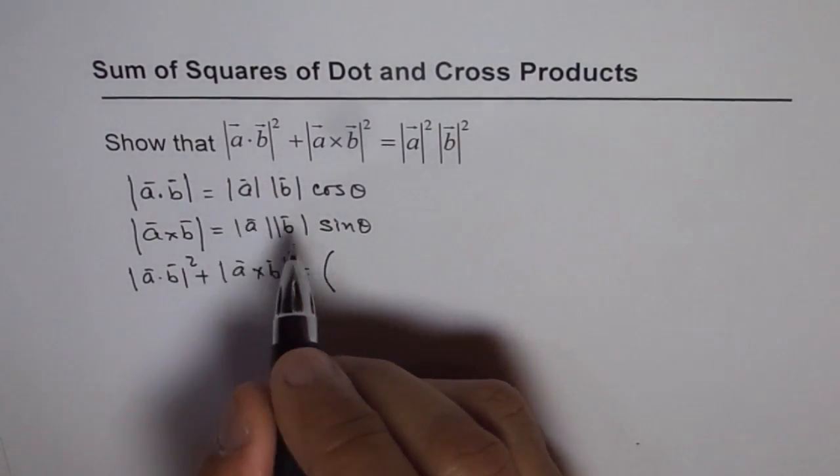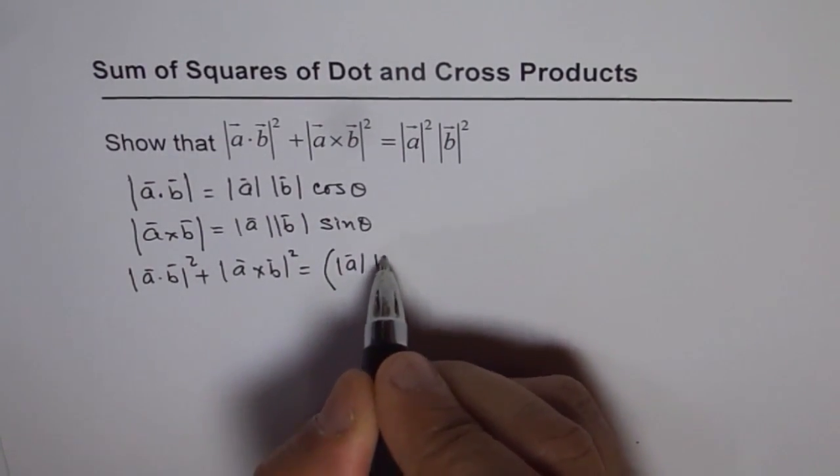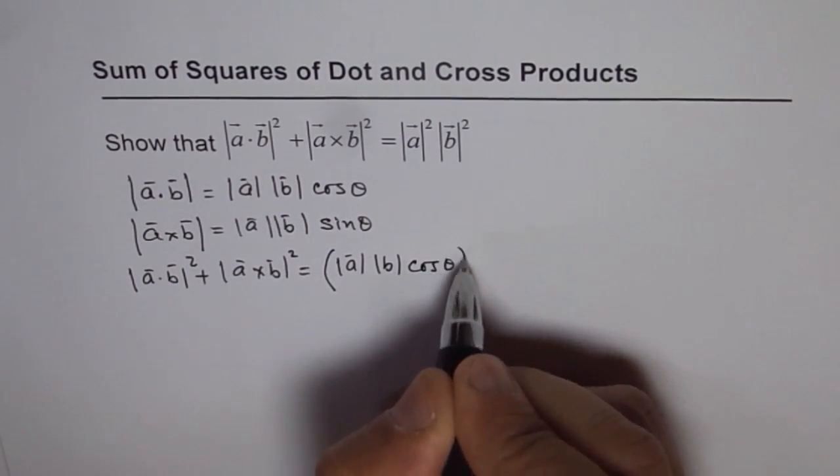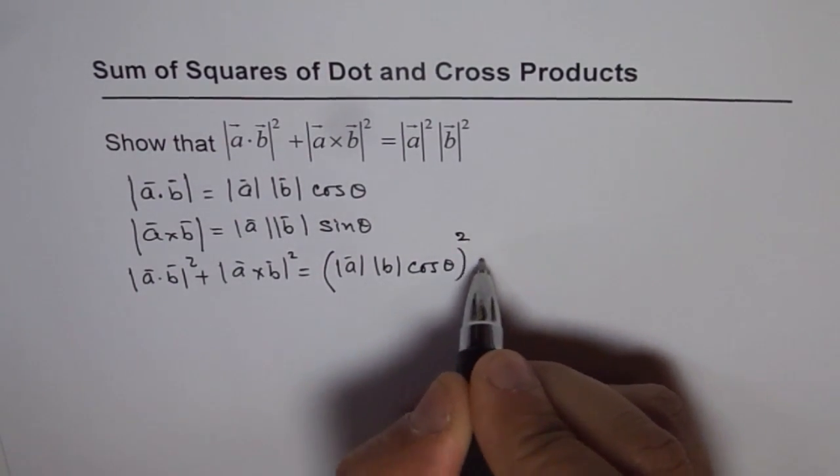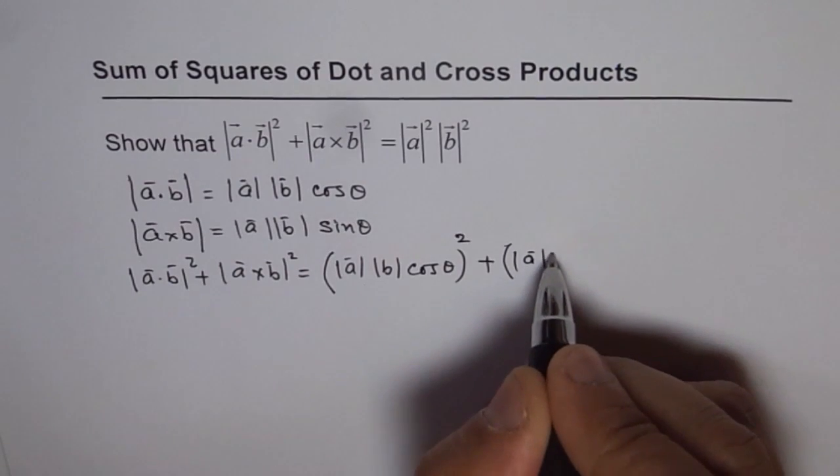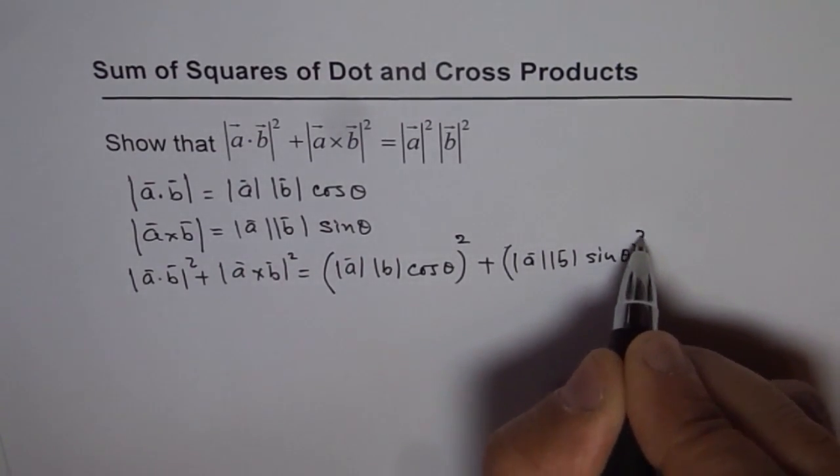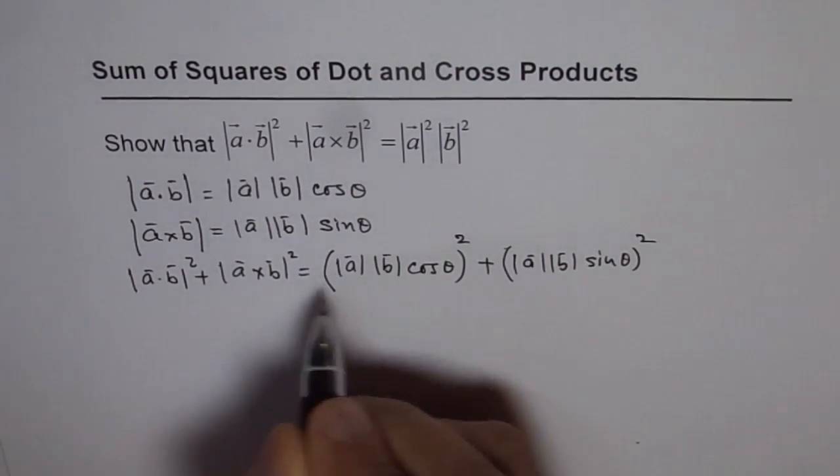So we will write this as square of magnitude of A magnitude of B cosine theta whole square plus magnitude of A magnitude of B sine theta whole square. So that is what it is.